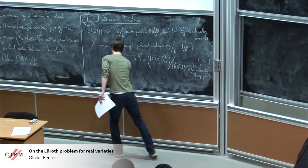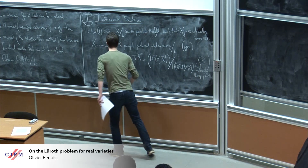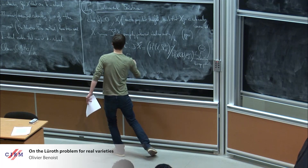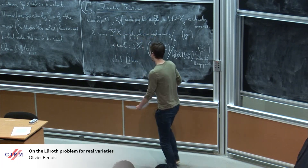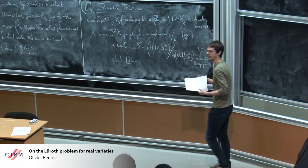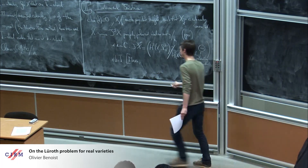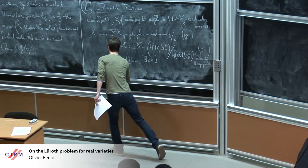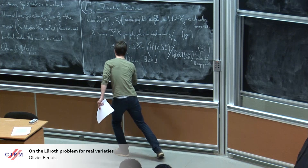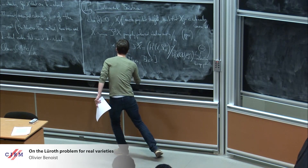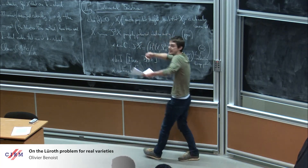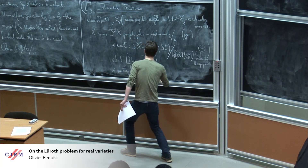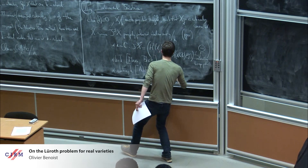Over an arbitrary field k, you need to verify that the Murre construction descends over the base field. This has been done by Achter, Casalaina-Martin, and Vial. The insight of Clemens and Griffiths is the following proposition — due to Clemens-Griffiths when k equals C, but an easy extension over any field.